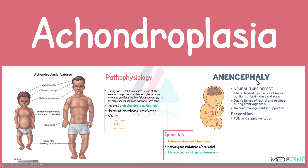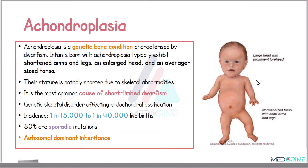Welcome. Today we shall be looking at achondroplasia. Achondroplasia is a genetic condition characterized by dwarfism, and it is one of the most common causes of short-limbed dwarfism. Children born with achondroplasia present with shortened arms and legs, an enlarged head, and an average-sized torso. Their stature is notably shorter due to skeletal abnormalities.